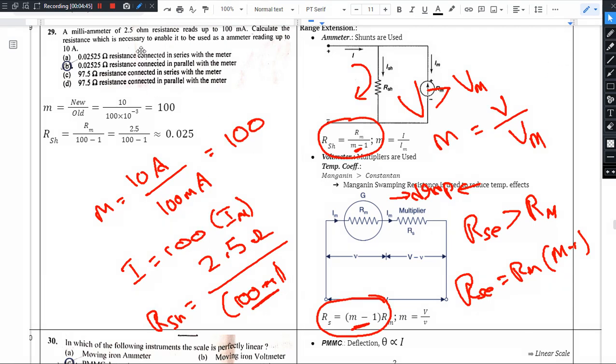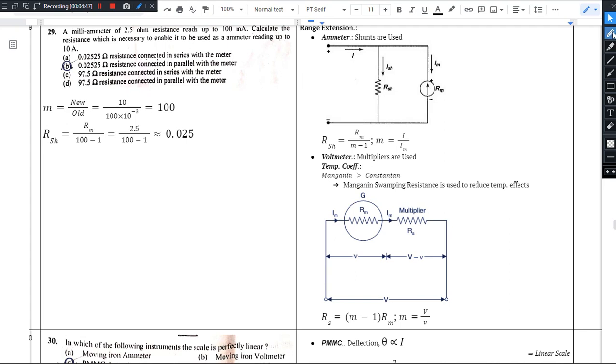For this type of question, a technique to follow: 2.5 divided by 100 minus 1 equals, this is equals to 0.025. Check which option has a value close to this. Option A has 0.025, Option B also has 0.025.